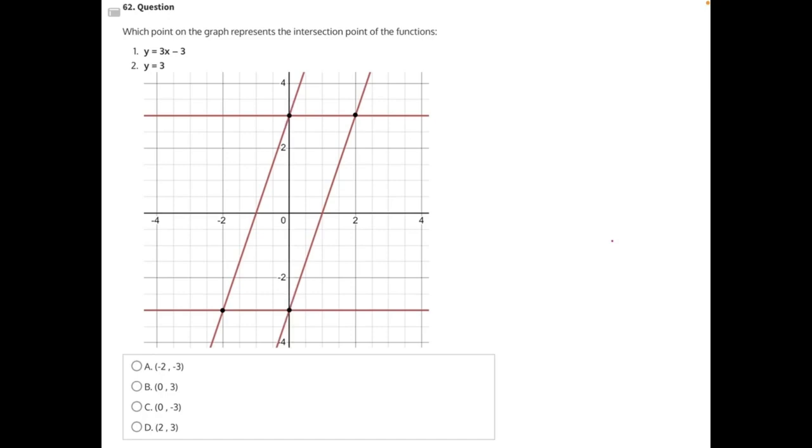Which point on the graph represents the intersection point of the functions y equals 3x minus 3 and y equals 3? Let's start by identifying which lines on the graph match these two functions.